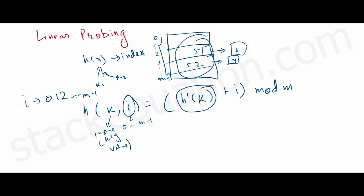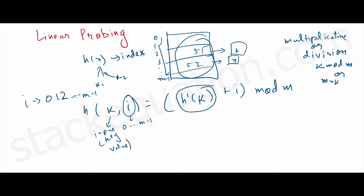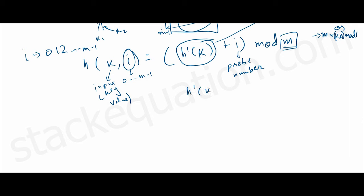h'(k) can be a multiplicative or division function, which we discussed in previous videos. That is, either k mod m (division method) or m · (k·a mod 1) (multiplicative method). i is the probe number, and m is the number of indices present in the hash table.